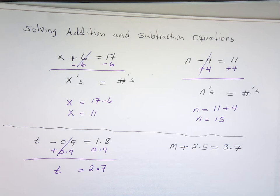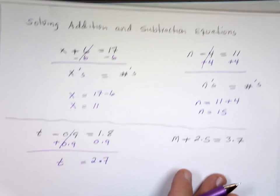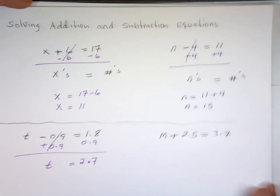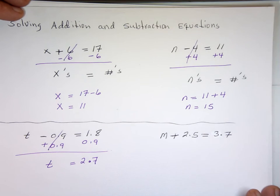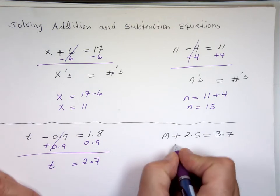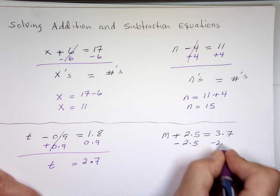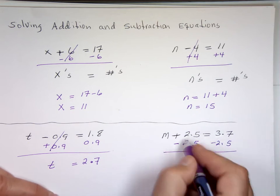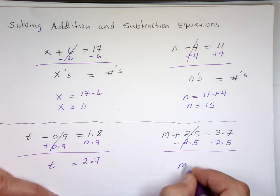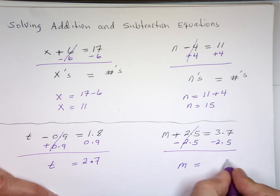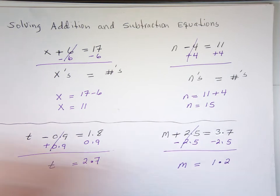All the m's on one side. You have an addition. What do we do with the addition? Subtract. m equals 5 from 7, 2. 2 from 3, 1. And your answer is 1.2.